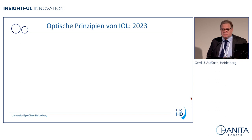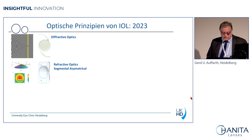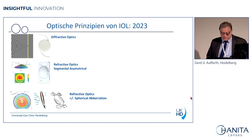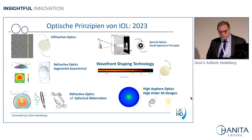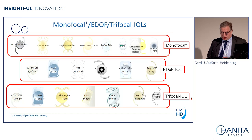At the moment we have a lot of optical principles: diffractive technology, refractive segmental technology, lenses based on spherical aberration, small aperture, wavefront shaping, or higher-order aberrations — monofocal plus — so many different things coming up and it's getting more and more confusing. We now have several categories: monofocal plus, EDOF, trifocal. The trifocal group is the only homogeneous group because in most cases they are all diffractive — sometimes a hybrid, but originally they are diffractive — so it's a well-defined group.